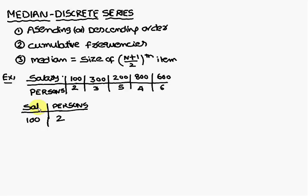Now you have to consider columns like this: Salary and number of persons. So with the 100 salary, 2. With the 200 salary, 5. And with the 300 salary, 3. With the 600 salary, 6. With the 800 salary, 4.